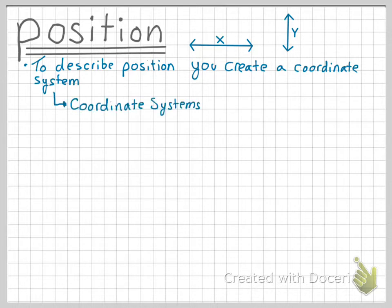Coordinate systems have the following properties. They must have an origin, also known as a zero point, and we must specify which way is positive.